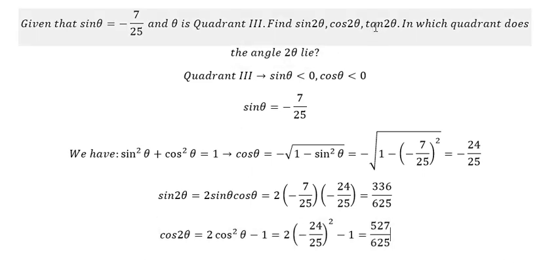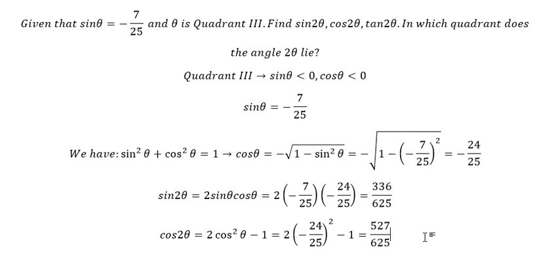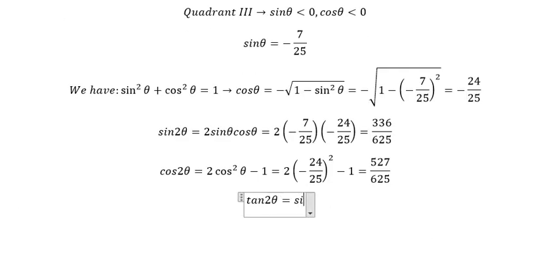And the last one, we have tan 2θ. Tan 2θ is equal to sin 2θ over cos 2θ.